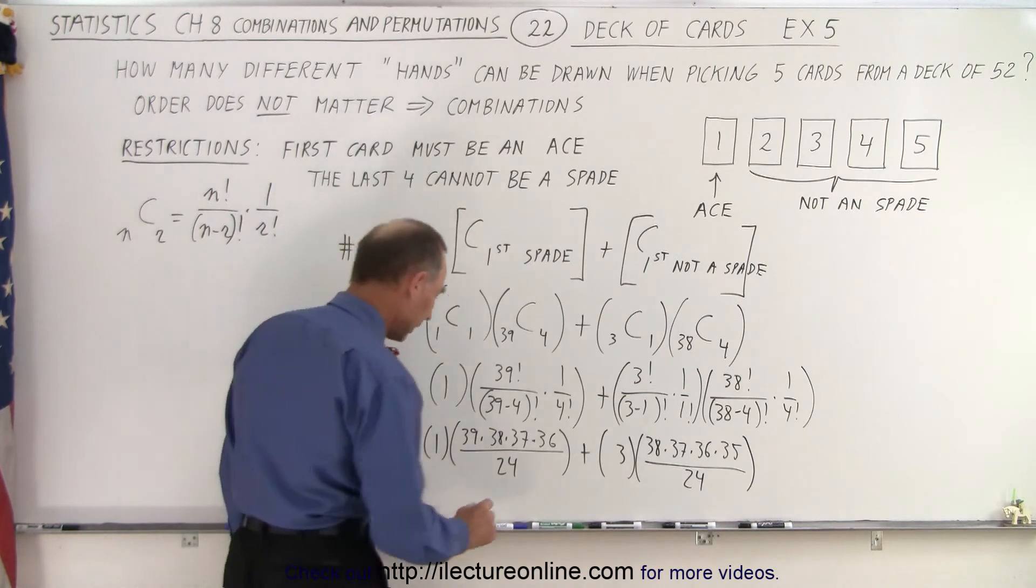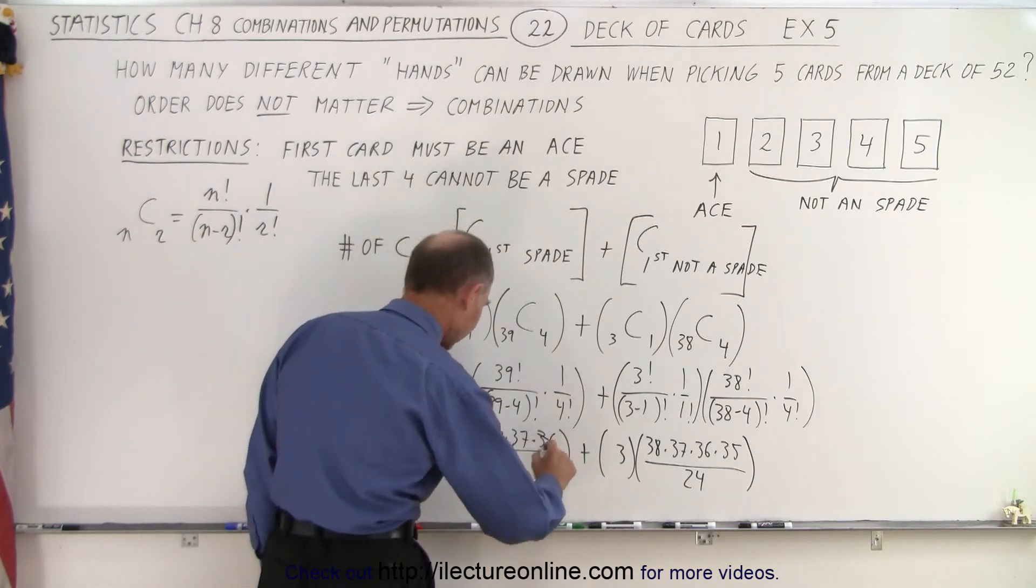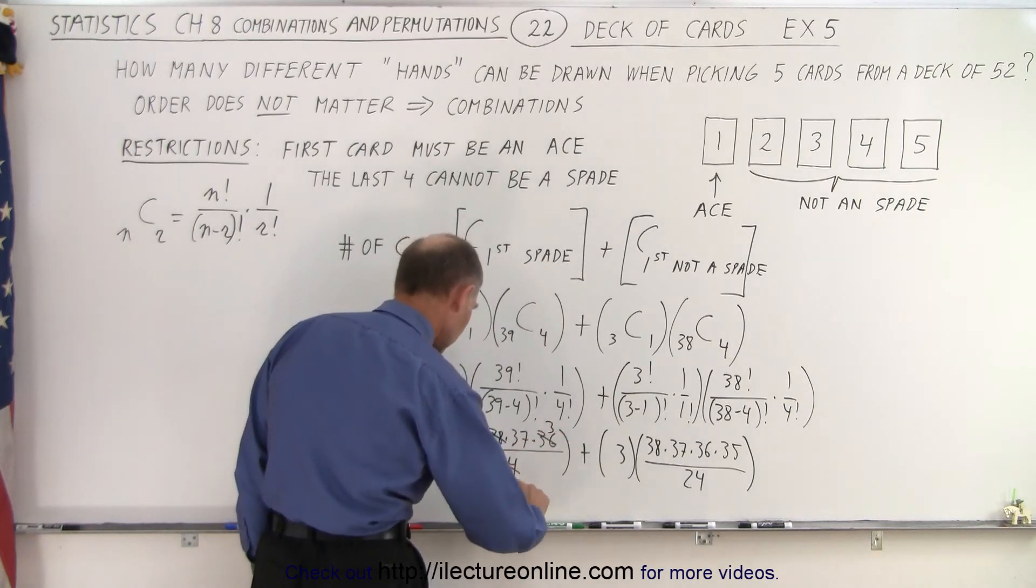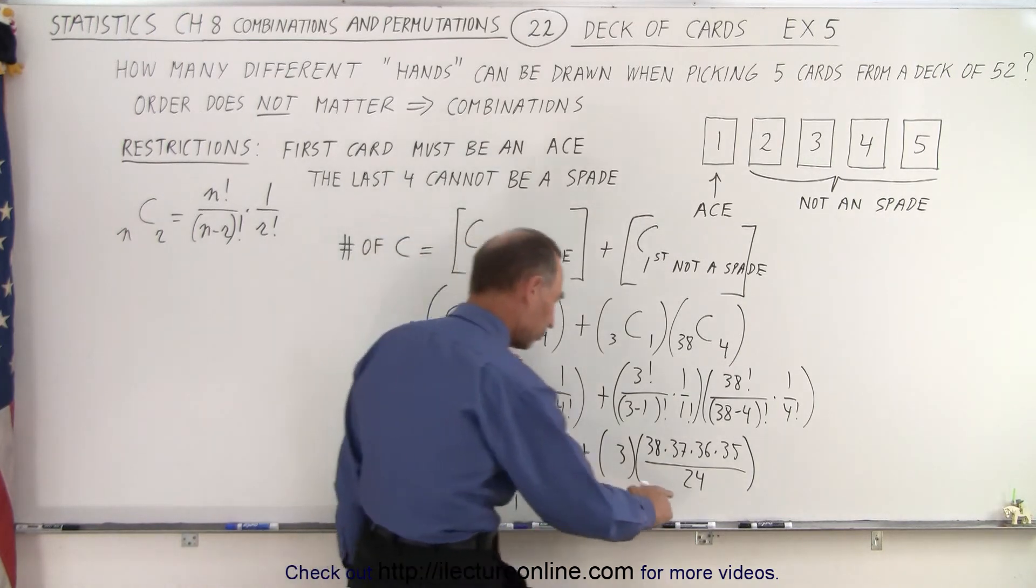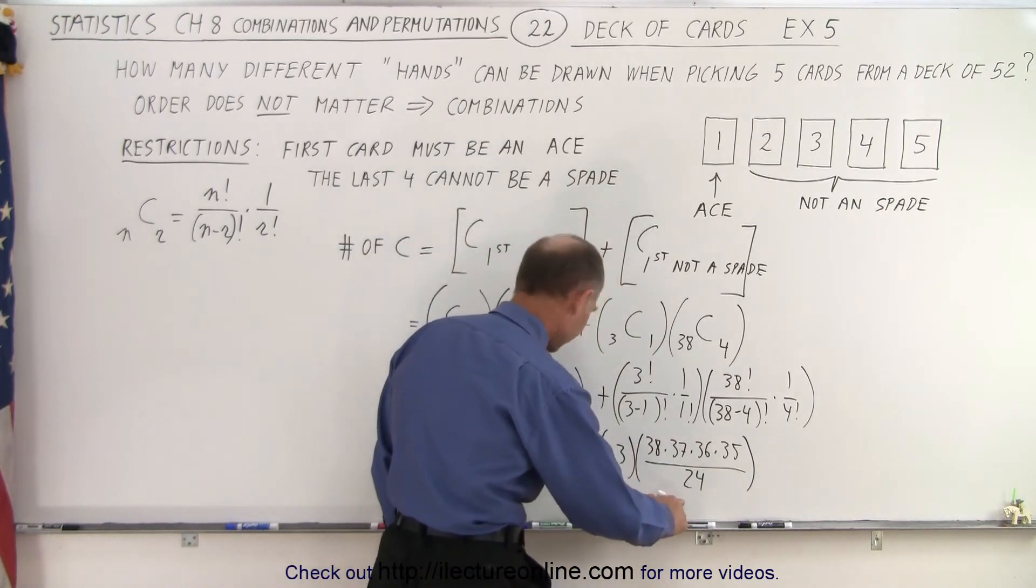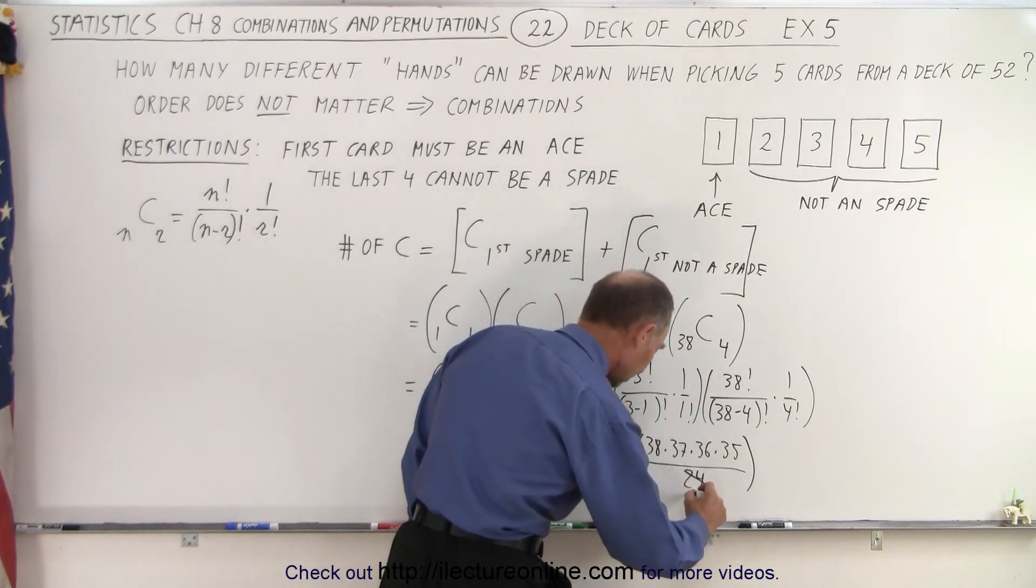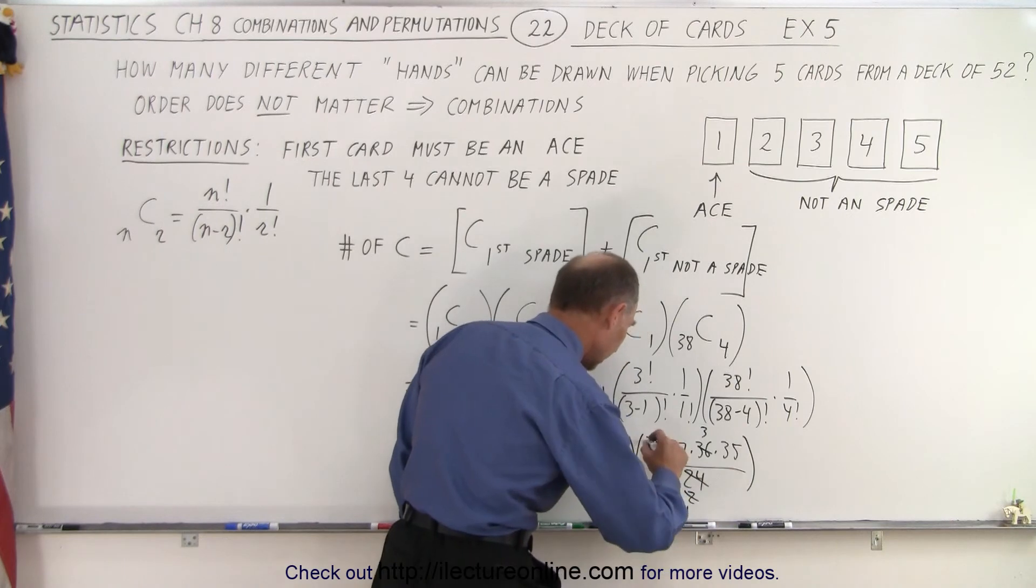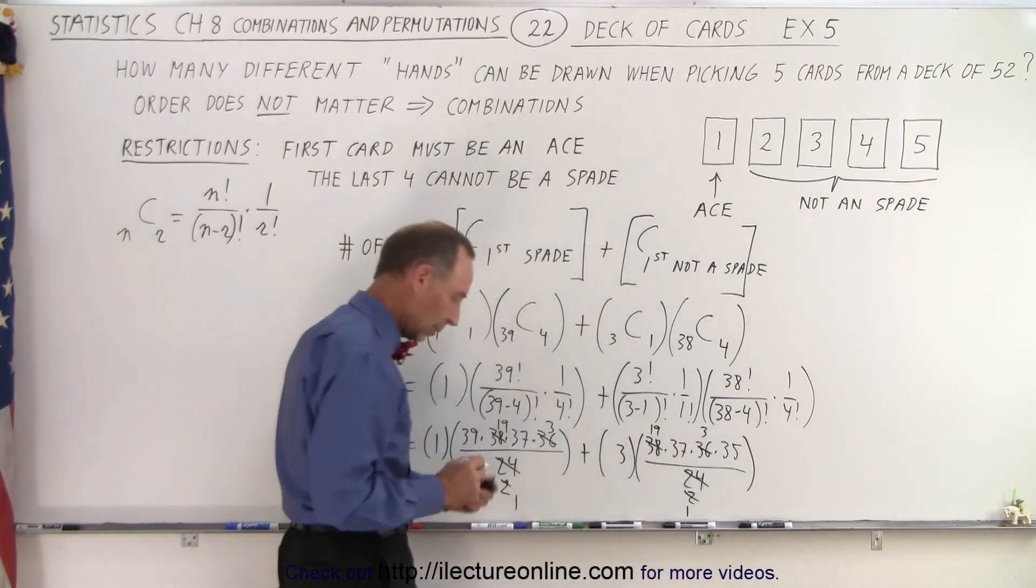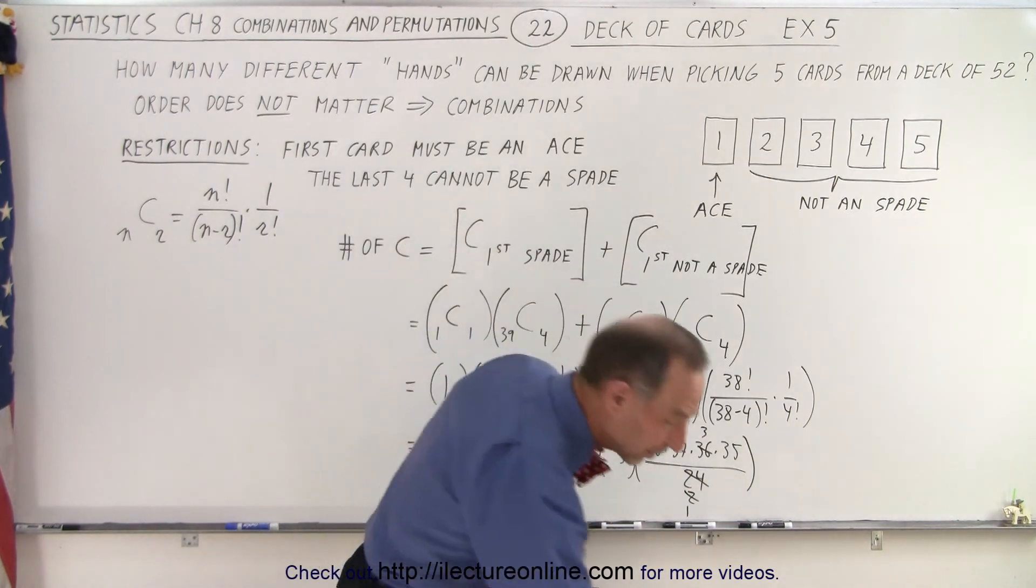Let's simplify this a little bit, so 24 and 36 are divisible by 12, so that gives me 2 and 3, and then the 38 and the 2 can simplify, that becomes 19. And then over here, we have 24 and 36 again, so that would be 2 and 3, and then 2 and 38, that's 1 and 19, so let's calculate them separately to see what we get.